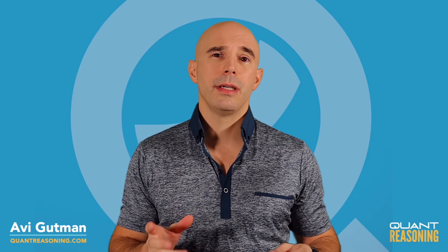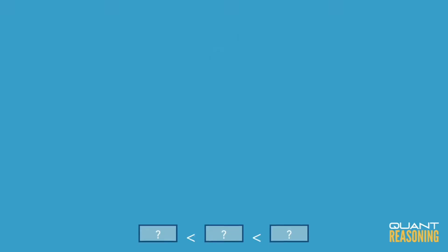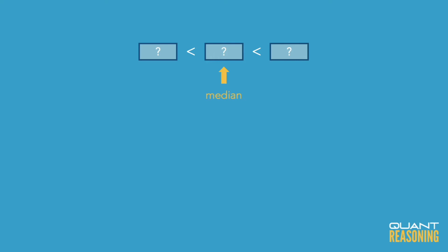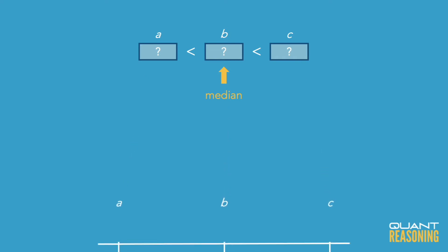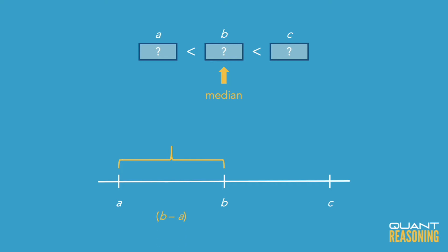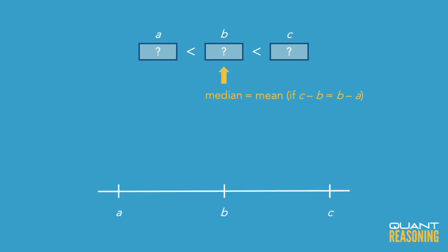In a set of three numbers, the mean and the median would be the same number if the middle of those three numbers — remember we know they're all different — so you could imagine a number line and call them A, B, and C. Their middle number on that number line is the median, and it would be equal to their mean if the deviation above exactly matches the deviation below. In other words, the lower number and the higher number would have to be equidistant from the middle number. Another way to say that is it has to be a symmetric set, an evenly spaced set, or an arithmetic sequence.